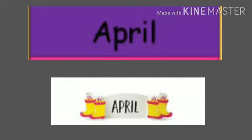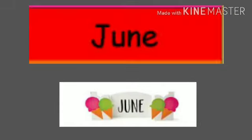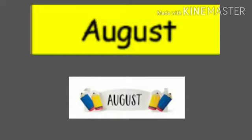The fourth month is April — A-P-R-I-L, April. The fifth month is May — M-A-Y, May. The sixth month is June — J-U-N-E, June. The seventh month is July — J-U-L-Y, July. The eighth month is August — A-U-G-U-S-T, August.